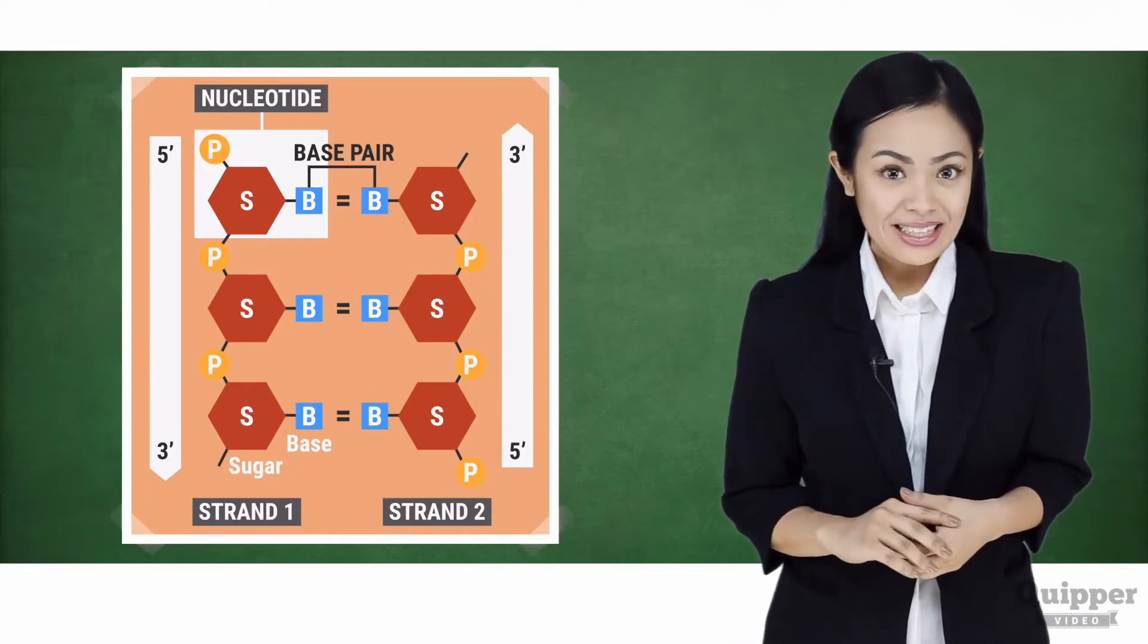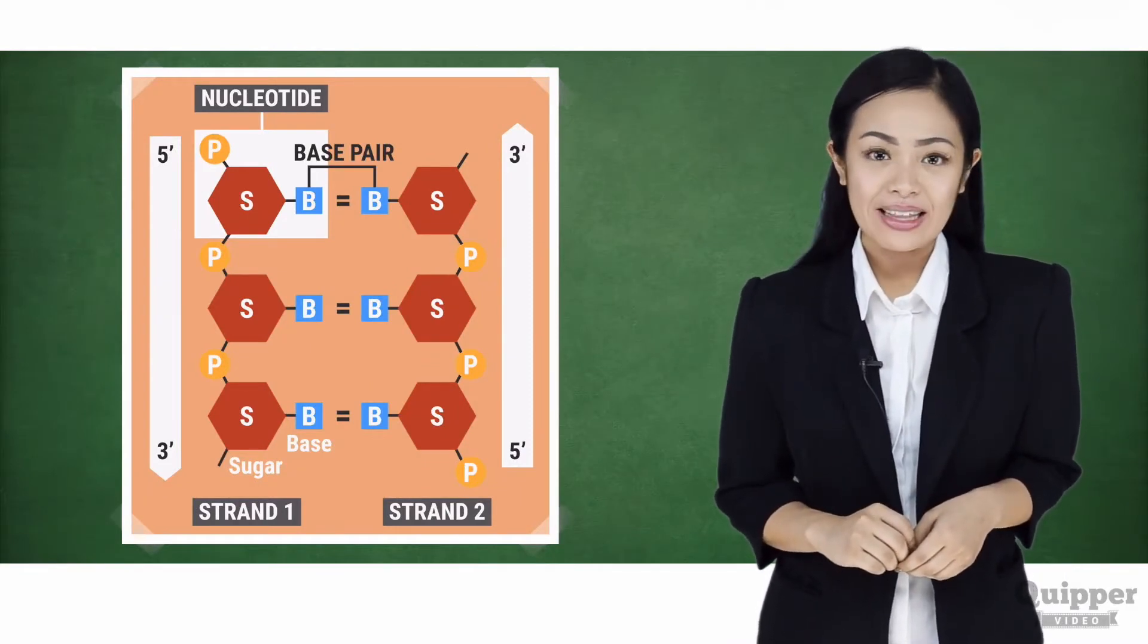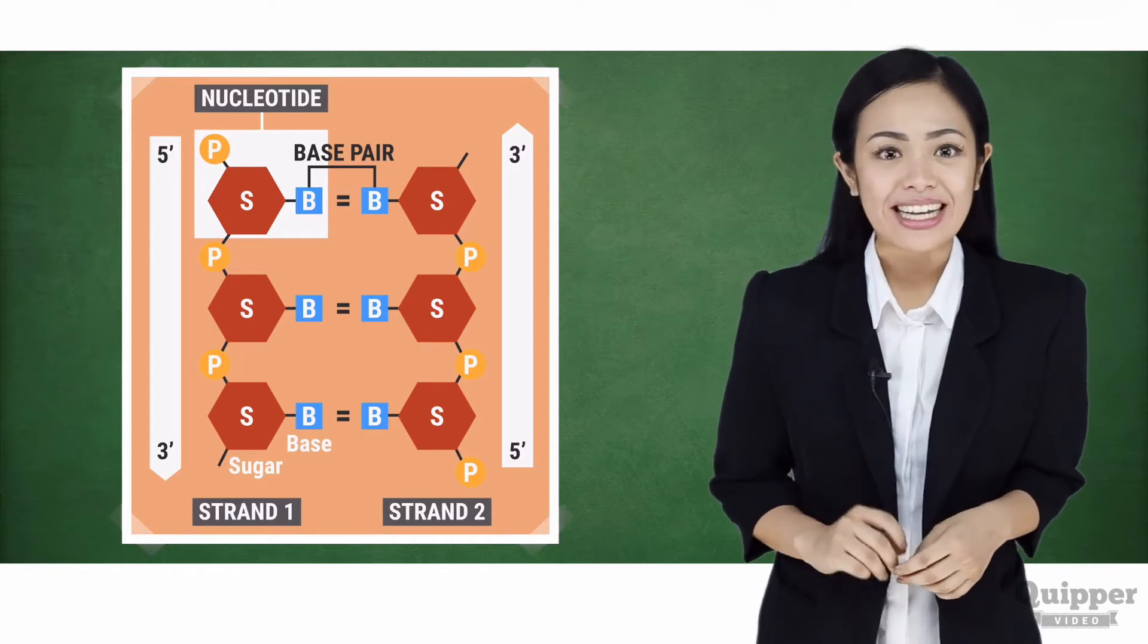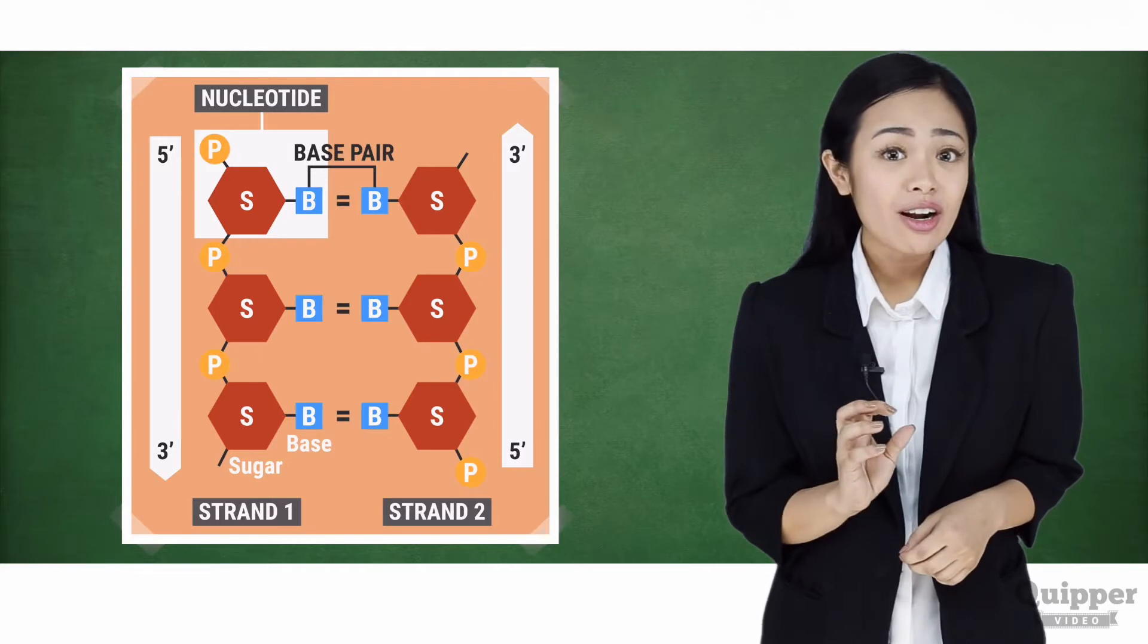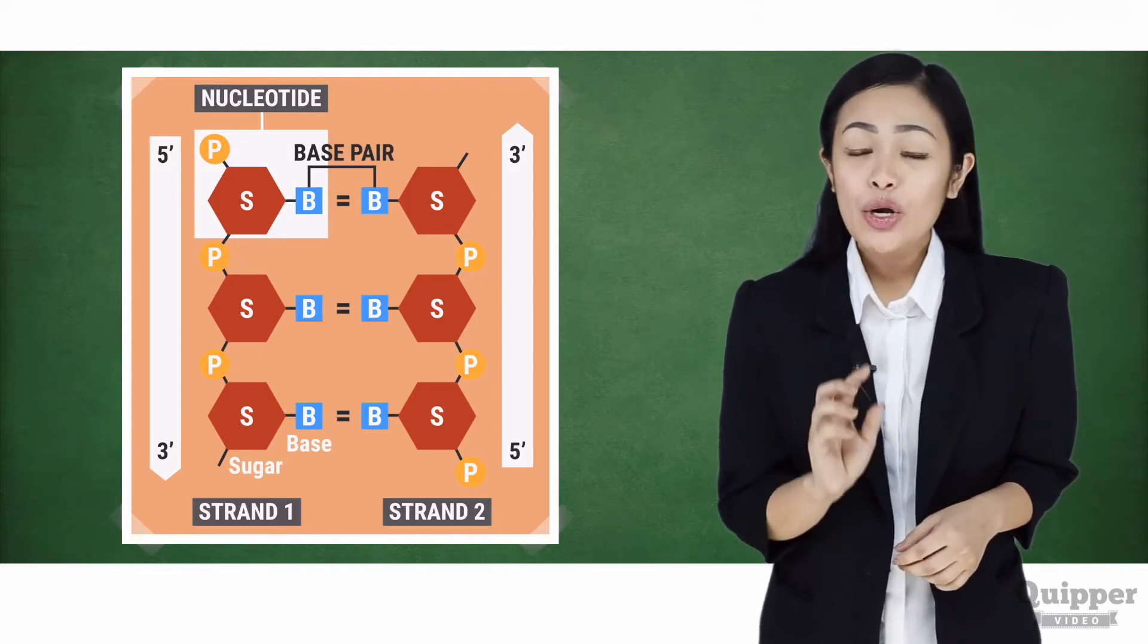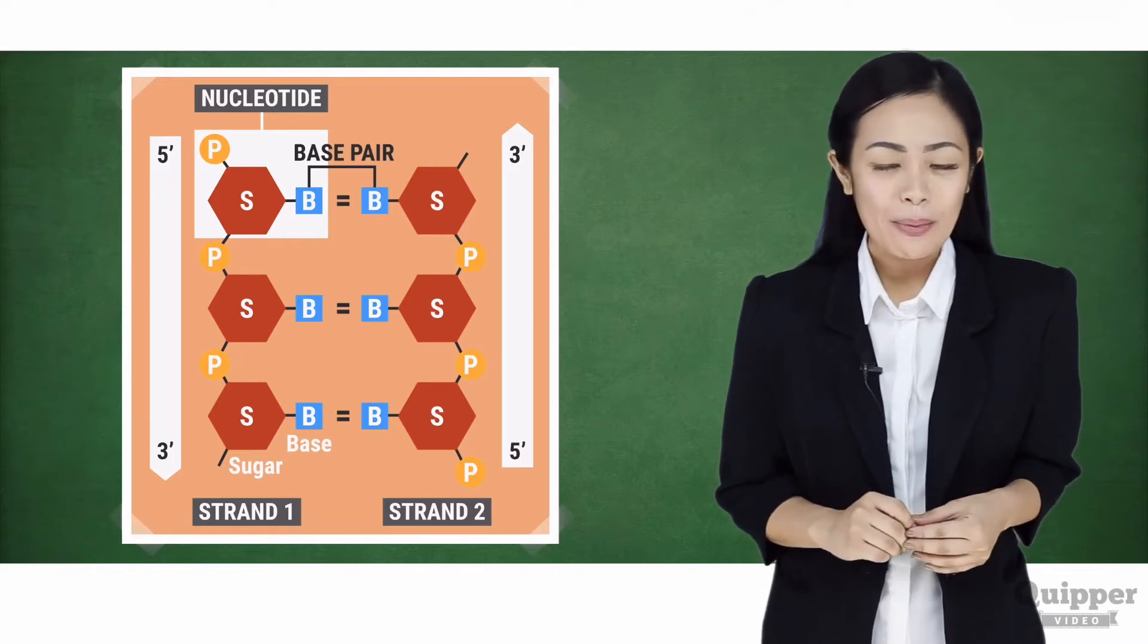Notice the linked nucleotides in this diagram. You already know that they are linked together by a phosphodiester bond. The link is between the sugar of a nucleotide to a phosphate of another. But the DNA is double-stranded.